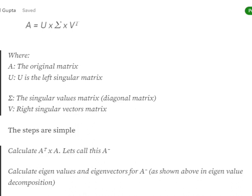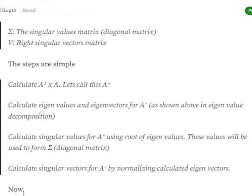Starting off with SVD, this might be a bit tough on the mathematical side, so pay attention. We will first calculate A-transpose cross A and call it A-dash. Then we calculate the eigenvalues and eigenvectors for A-dash, which is very similar to eigenvalue decomposition — the only difference being we compute it for A-transpose cross A instead of A minus lambda I.